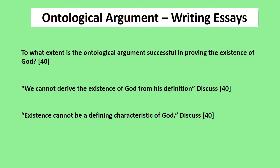'Existence cannot be a defining characteristic of God.' That's looking at Kant's criticism, but again, it's very similar because it's only the Ontological Argument that says existence is a defining characteristic of God. So it's basically asking, is the Ontological Argument correct? You've got to be aware of key terminology surrounding this argument. You could also get an essay comparing which gives better proof of God's existence: inductive or deductive arguments. The Ontological Argument is the only deductive one; Cosmological, Teleological, and Religious Experiences are all inductive arguments.